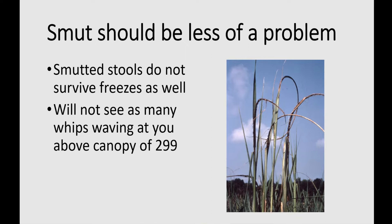I'm hoping that we won't see as many smut whips out there waving to the growers. L01-299 is our number one variety — it's very susceptible and can get quite a bit of smut. It'll build up, so healthy seed cane is essential with this variety, but hopefully we'll see a little bit less problems with smut this year in L01-299 and other varieties that have a problem.